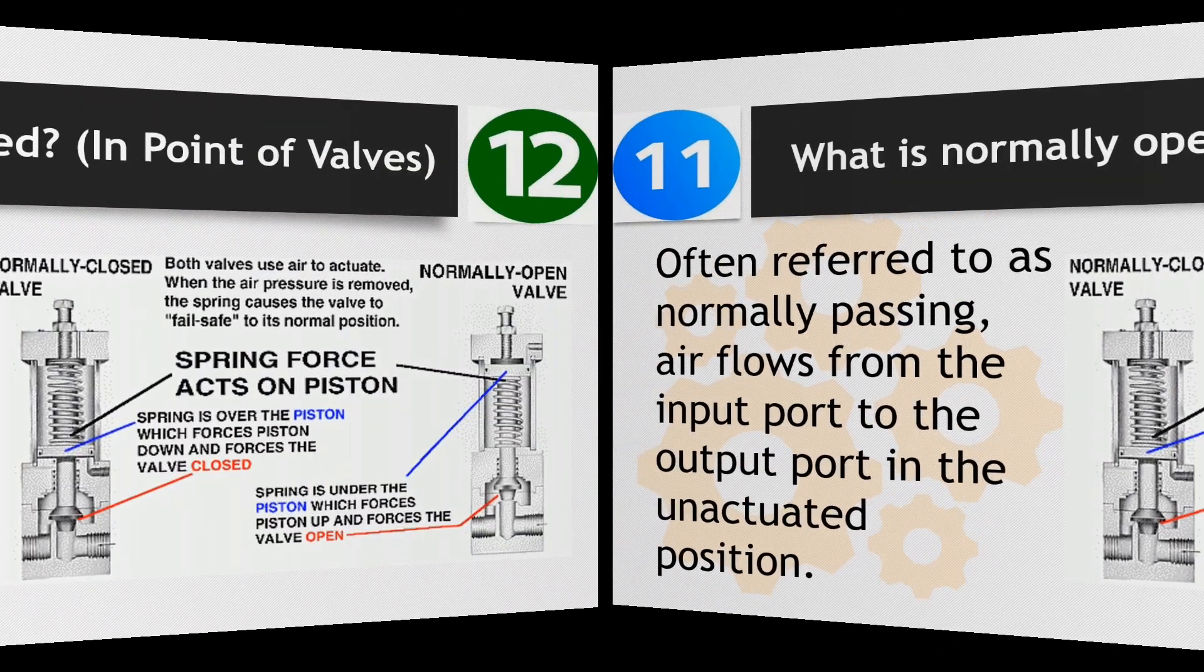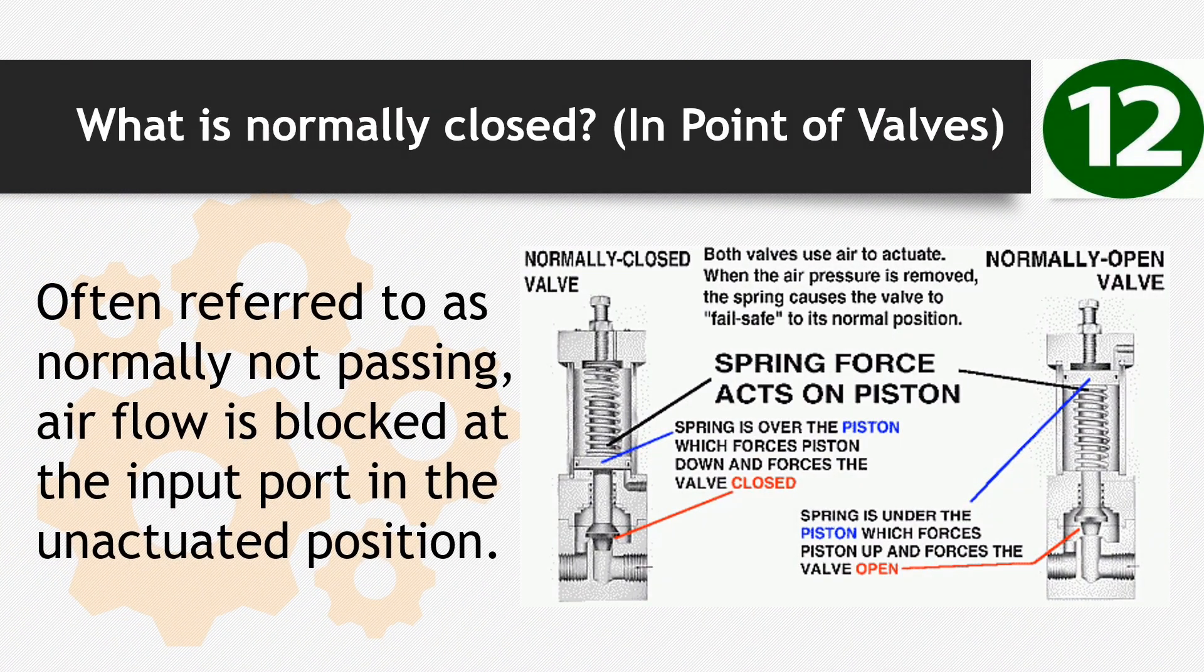Number 12: What is normally closed? In point of valves, often referred to as normally not passing, air flow is blocked at the input port in the unactuated position.